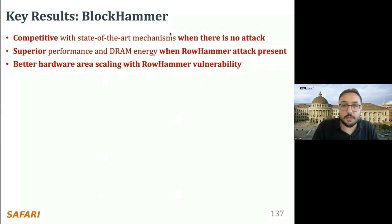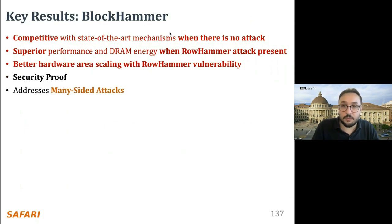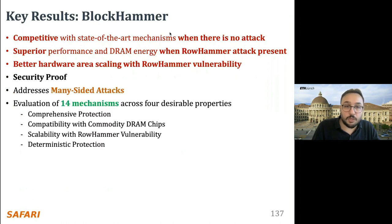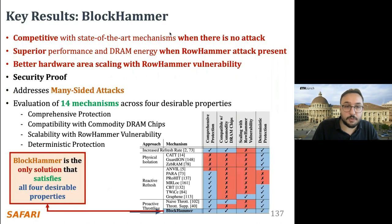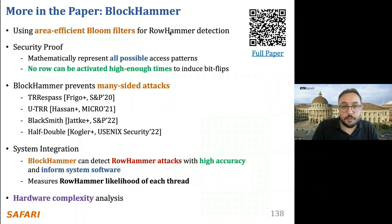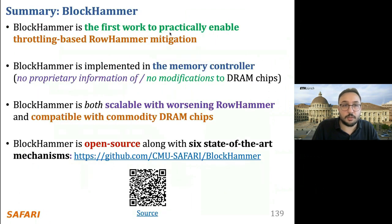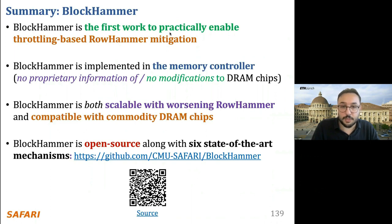BlockHammer is compatible with state-of-the-art mechanisms when there is no attack, provides better performance and DRAM energy when a RowHammer attack is present, and scales better with worsening RowHammer vulnerability. The paper provides a mathematical security proof showing BlockHammer is secure, a methodology for addressing many-sided attacks, and an evaluation of 14 mechanisms across four desirable properties — showing BlockHammer is the only solution satisfying all four. BlockHammer is implemented entirely in the memory controller with no proprietary information or modifications to DRAM chips needed, is scalable, compatible with commercial DRAM chips, and is open source on GitHub.